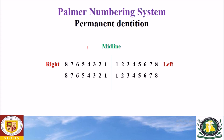To represent each quadrant, we use symbols: the first symbol indicates the maxillary right quadrant, the second indicates the maxillary left quadrant, the third indicates the mandibular left quadrant, and the fourth indicates the mandibular right quadrant.